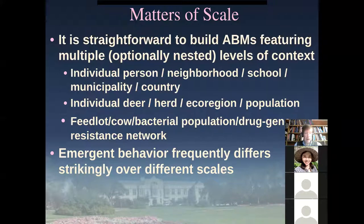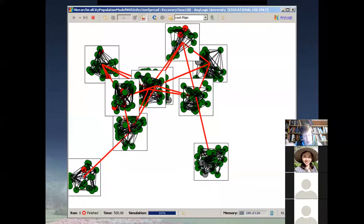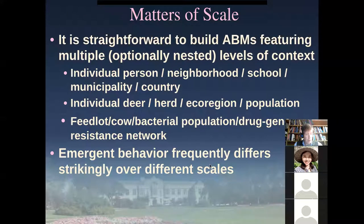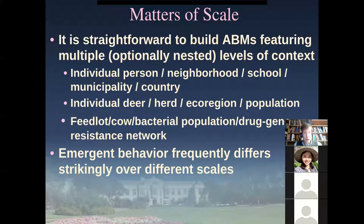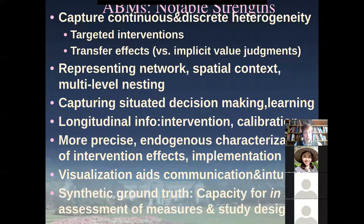This is a nested context model — a hierarchical model. We have the overall population at the top level, then cities at the next level down, and within each city we have people. We have different networks at different scales, and this is very natural to create within agent-based models because within the model we have the same sort of nesting we do in the real world.